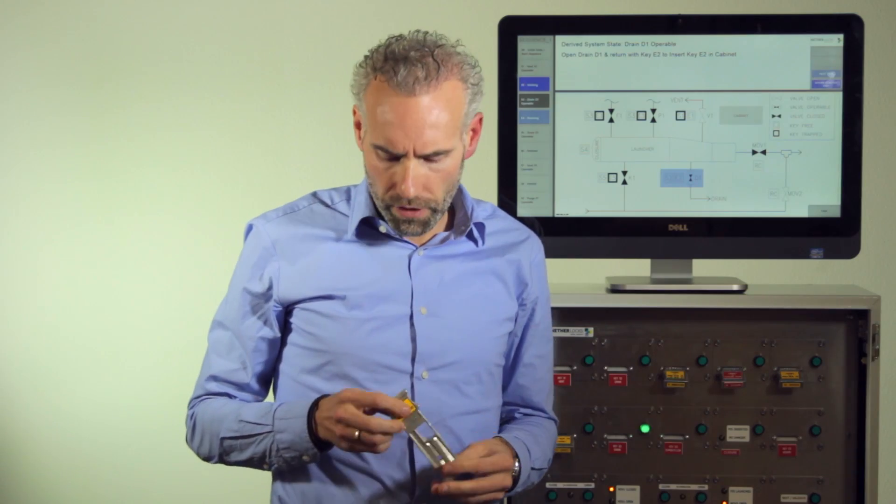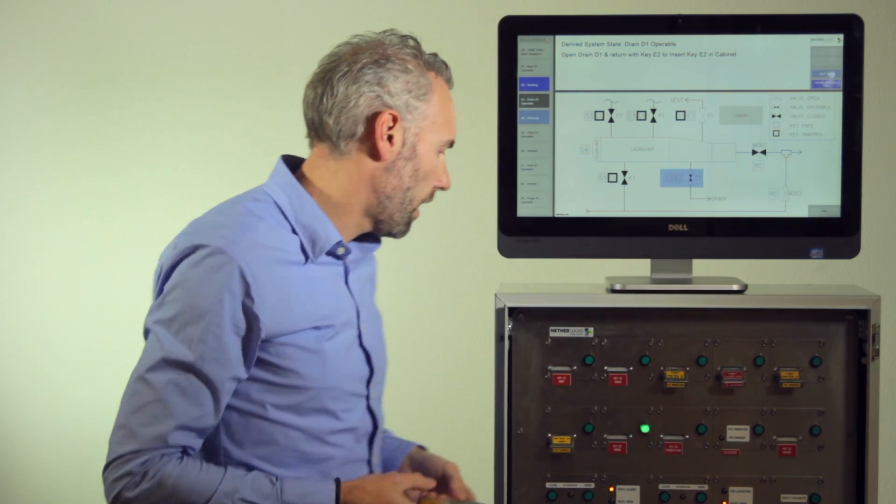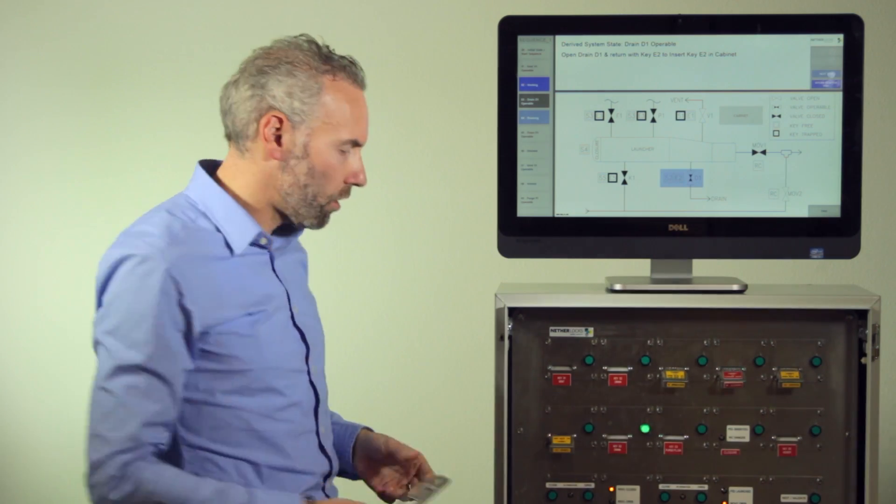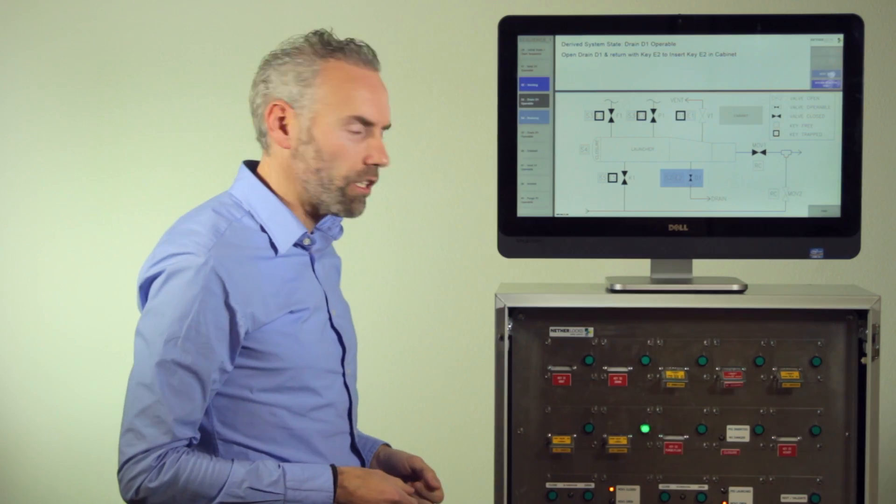I have opened the drain valve and returned with key E2 and again the cabinet instructs the operator where to return the key.